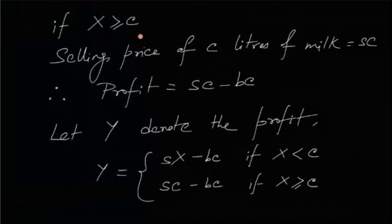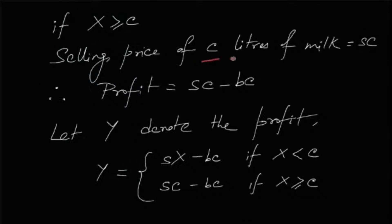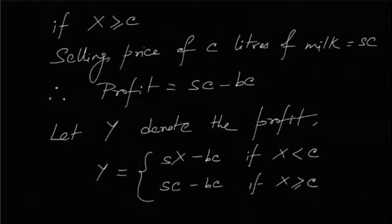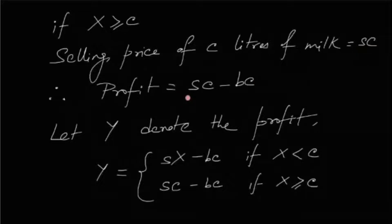If X is greater than or equal to C, meaning the demand exceeds C, then we can only sell up to C liters of milk, because that is the total amount available. We cannot sell more than C. So the selling price is SC, and the profit is SC minus BC.